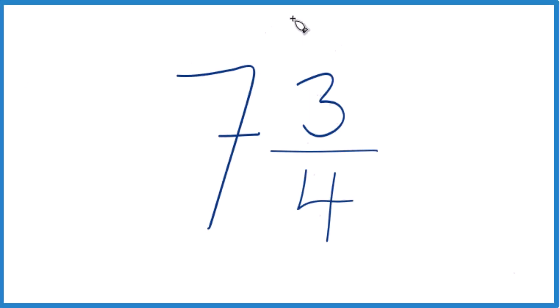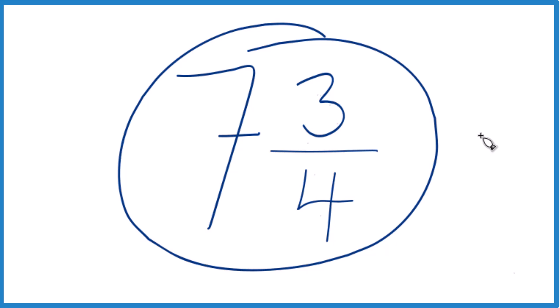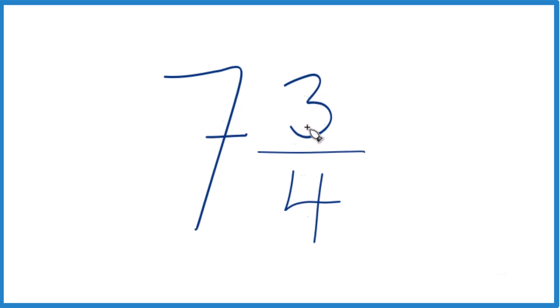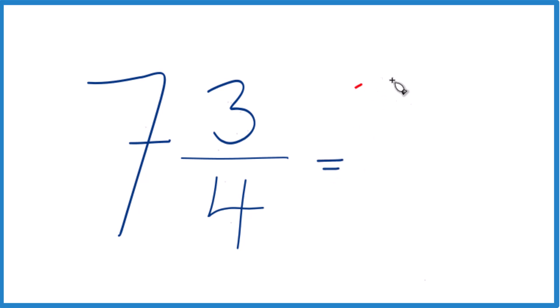Let's write the mixed number 7 and 3 fourths as an improper fraction. Here's how you do it. You take the whole number, 7 times 4, that's 28, and then you add that to the 3. So 7 times 4 is 28, plus 3, that's 31.